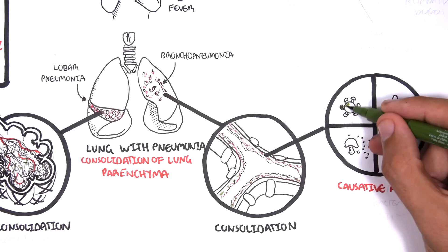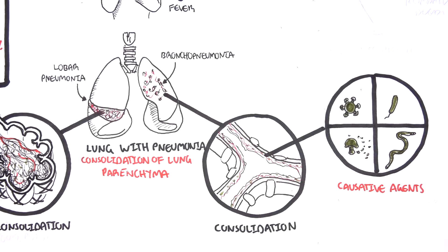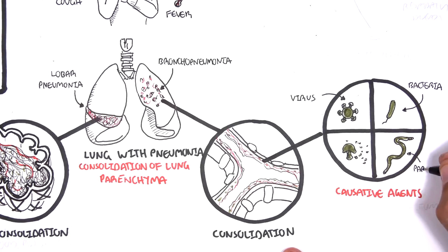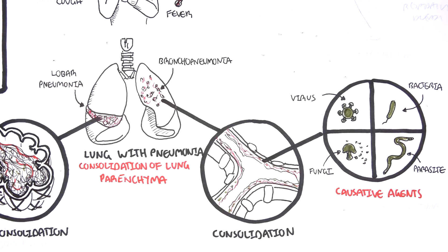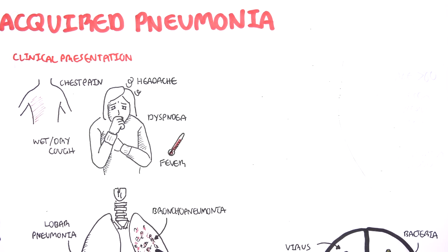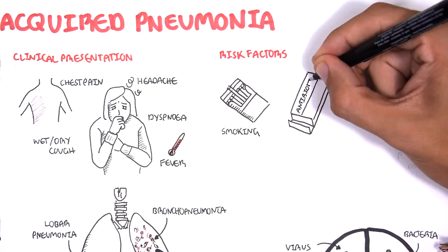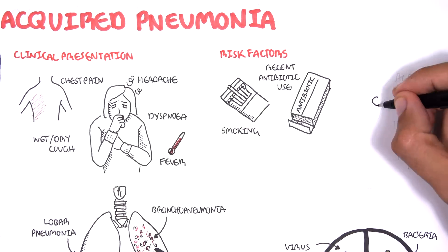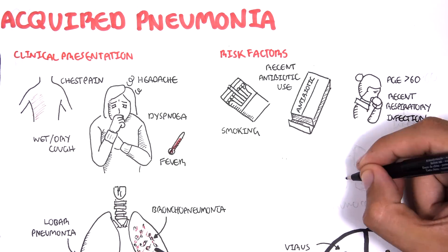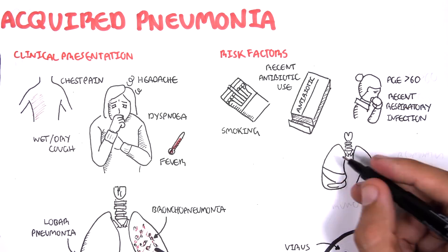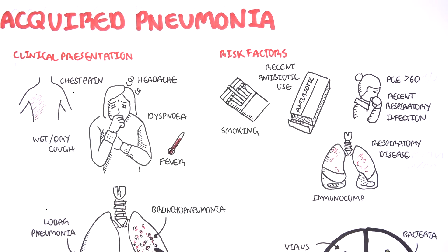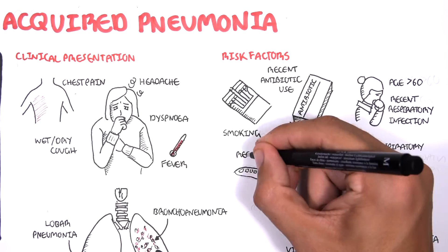There are many causes of pneumonia — viral, bacterial, parasitic, or fungal. Not everyone develops pneumonia; some people are more susceptible than others. Risk factors include smoking, recent antibiotic use, age greater than 60, a recent respiratory tract infection, having an existing respiratory lung disease, being immunocompromised, and having travelled recently.